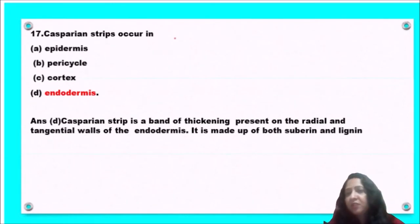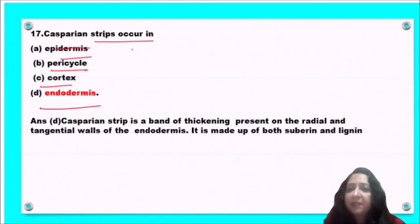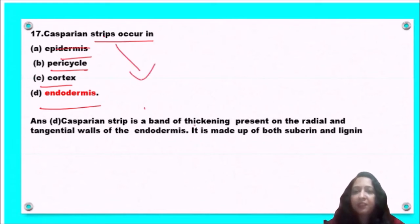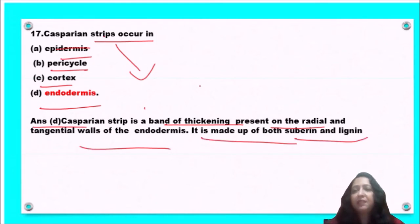Next question: Casparian strips occur in epidermis, pericycle, cortex, or endodermis? Casparian strips are bands of thickening present on the radial and tangential walls of the endodermis and are made up of suberin and lignin. So option D, endodermis, is the correct answer.